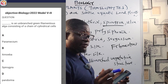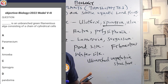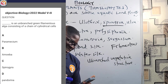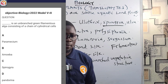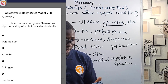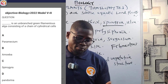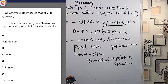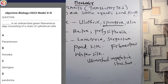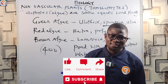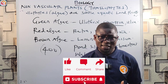A 2022 model question number 8 states: 'Dash is an unbranched green filamentous algae consisting of a chain of cylindrical cells.' The options are: A. Paramecium, B. Amoeba, C. Spirogyra, D. Pandorina. The correct answer is Spirogyra. That is where we will stop today. In the next class we will take the other non-vascular group, which is the bryophytes. Thanks for watching.